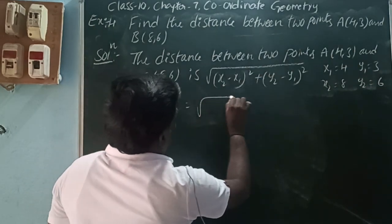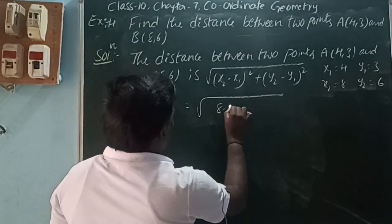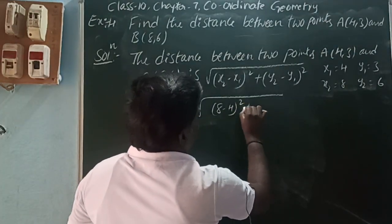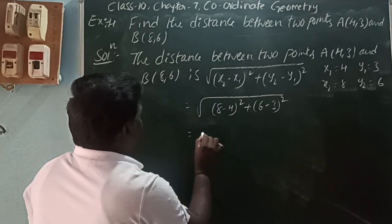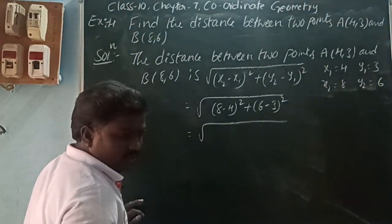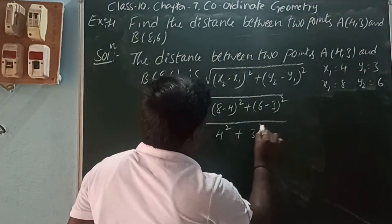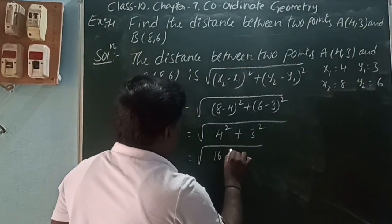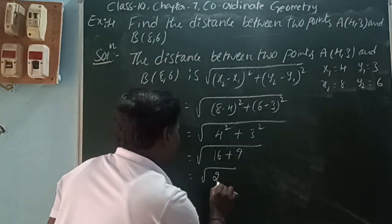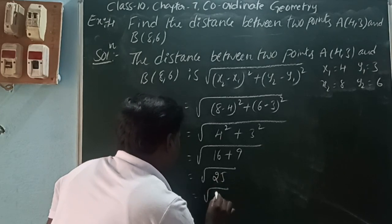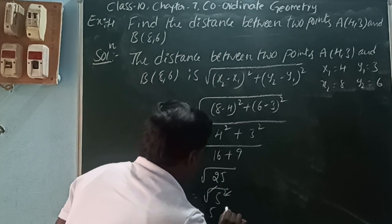That is square root of (8 - 4)² plus (6 - 3)² = square root of 4² plus 3² = square root of 16 plus 9 = square root of 25. We can write 25 as 5², so square root of 5² equals 5 units.